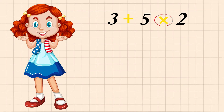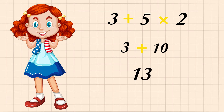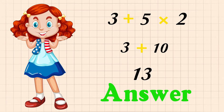I choose multiplication first. So first I'll multiply 5 and 2 — it gives us 10. And then 3 plus 10, so the answer is 13.